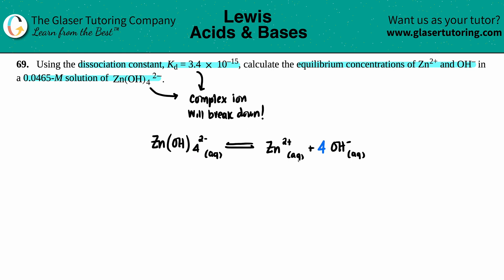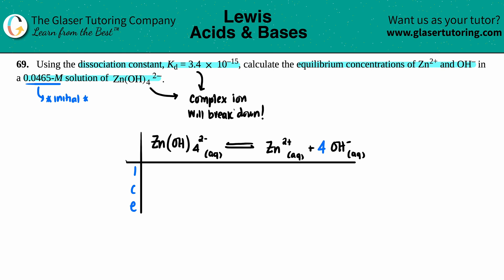Now we need to use the Kd to get equilibrium values. They give us a 0.0465 molar solution of the complex ion — that's our initial concentration. Anytime we have an initial concentration we use an ICE table. So let's ice it out: I stands for Initial. Initially we have 0.0465 M for the complex ion, and we're told nothing about starting zinc or hydroxide, so those are both zero.